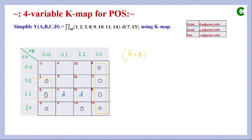We check for another quad. Two cells and another two cells form a quad. Evaluating: A changes (eliminated), B is 0 so it stays B. C changes (eliminated), D is 1 so it becomes D'. With OR operation between them, the simplified form for this quad is B + D'.